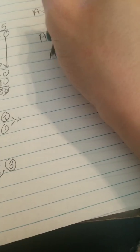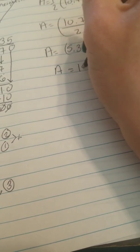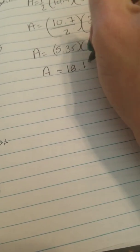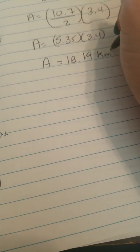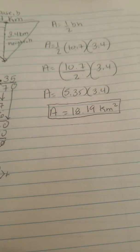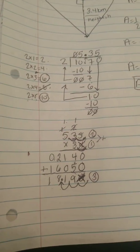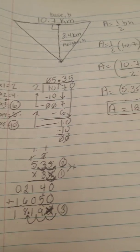So my area for this triangle is 18 and 19 hundredths kilometers squared. It takes a few steps to get there, but as long as you follow them and you do everything the way you're supposed to, you should be okay to go.